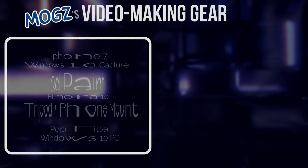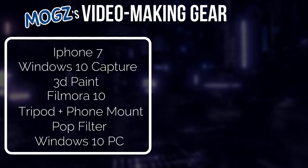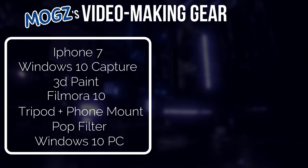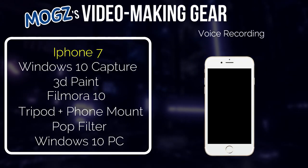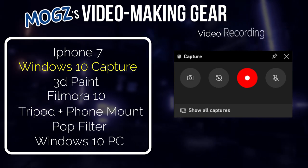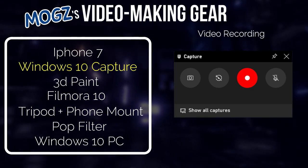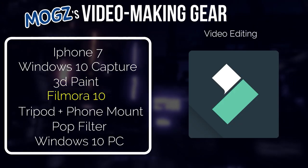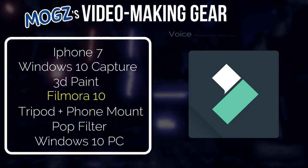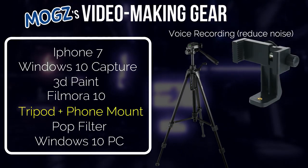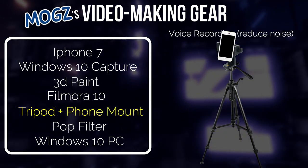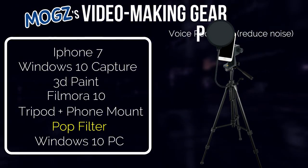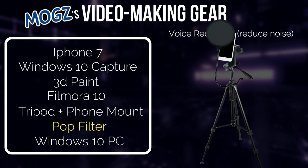Firstly, here's a quick list of all of the gear and software that I use to make my videos. As you can see, it's all very basic stuff. I use my iPhone 7 to record my voice, I use Windows 10 Capture to record all my clips, 3D Paint for image editing, and Filmora 10 for video editing. Other than that, I've got a tripod and a phone mount so I don't have to hold my phone while recording my voice, and a $10 pop filter to filter out any pops in my audio from P's and B's, which is super important.